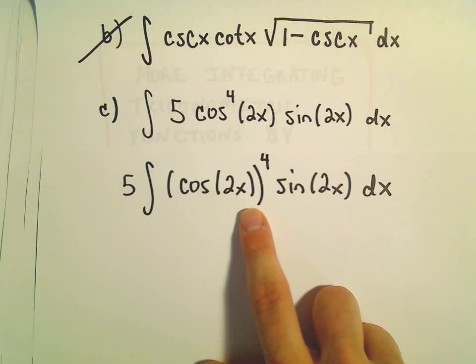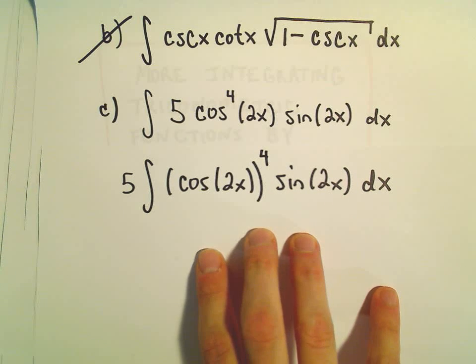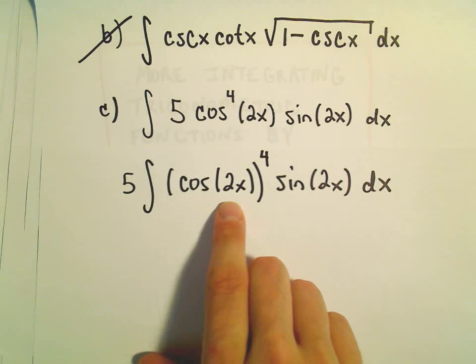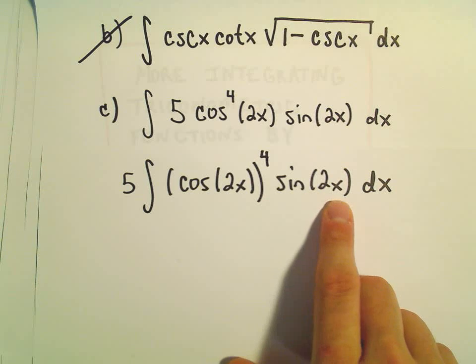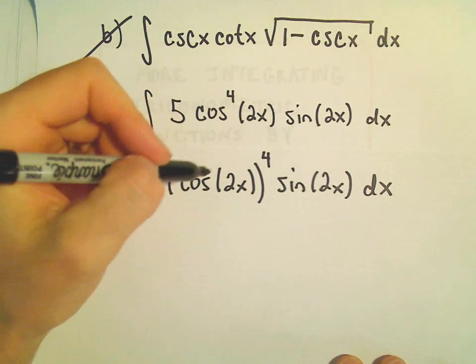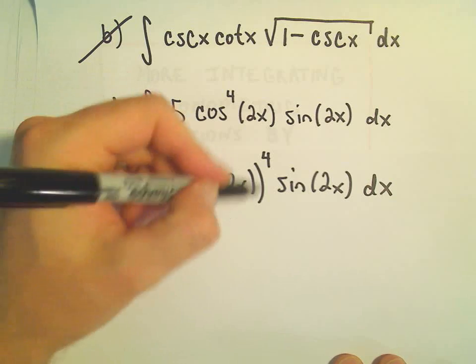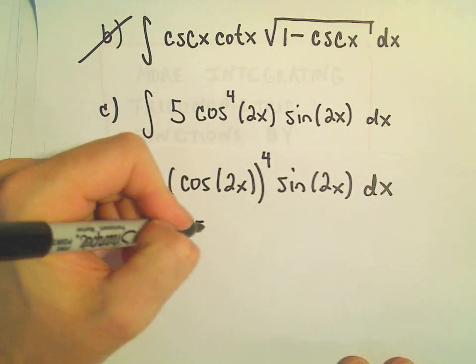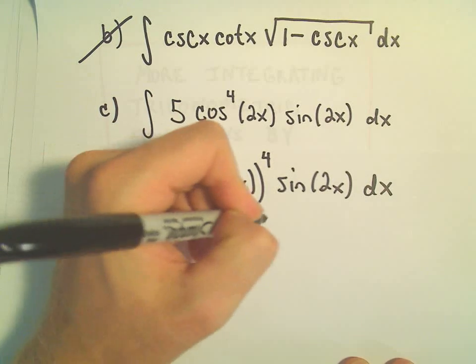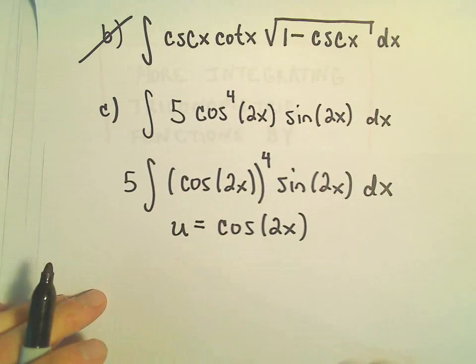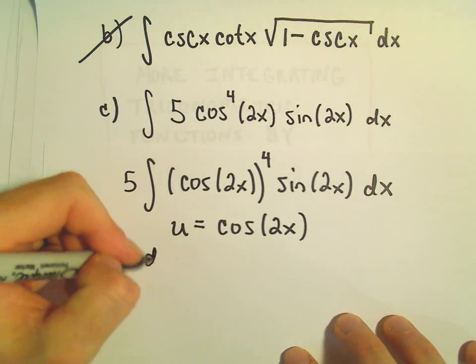But even easier than that, by far easier. I see a cosine of something and sine of something. Well, if I can just make this stuff in the parentheses a single quantity, integrating would not be too terrible at all, as long as the du helps. And in this case, it will.